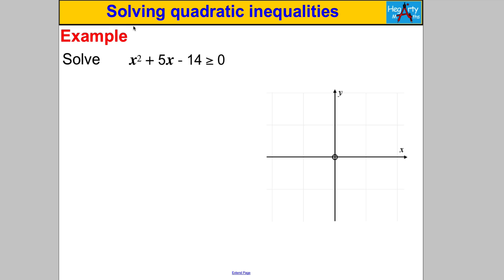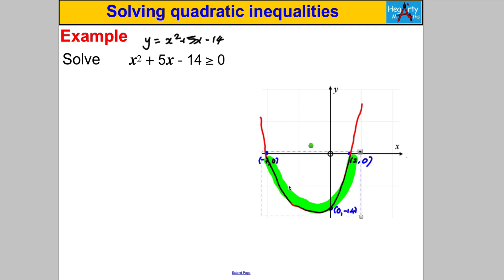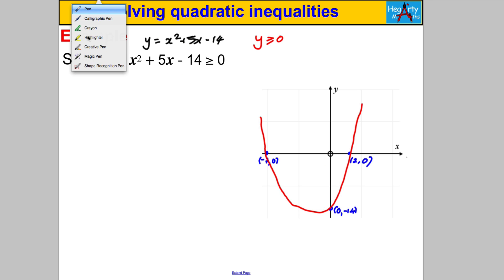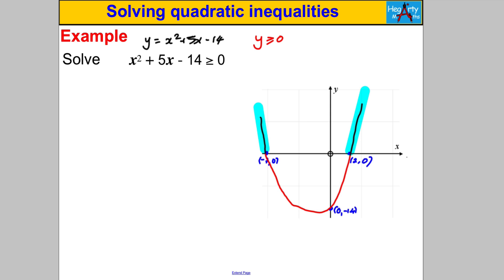Let's try another one — pause the video and have a go. We use the same graph y = x² + 5x - 14 as before. This time we're looking for where y ≥ 0. The y-values on the red line are bigger than 0 on the left side and the right side of the roots, so x ≤ -7 or x ≥ 2. We use less-than-or-equal-to and greater-than-or-equal-to signs because the original question uses that sign.